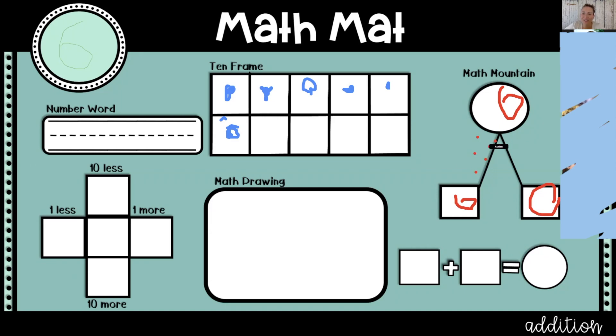Nice, Auden. So Auden said if I have six total at the top of my math mountain and six fall down one side, then I have zero on the other side. So my math partners are six and zero. Excellent. Who would like to write the equation for that math mountain? Auden, you want to pick someone? Yeah, go for it. Layla.